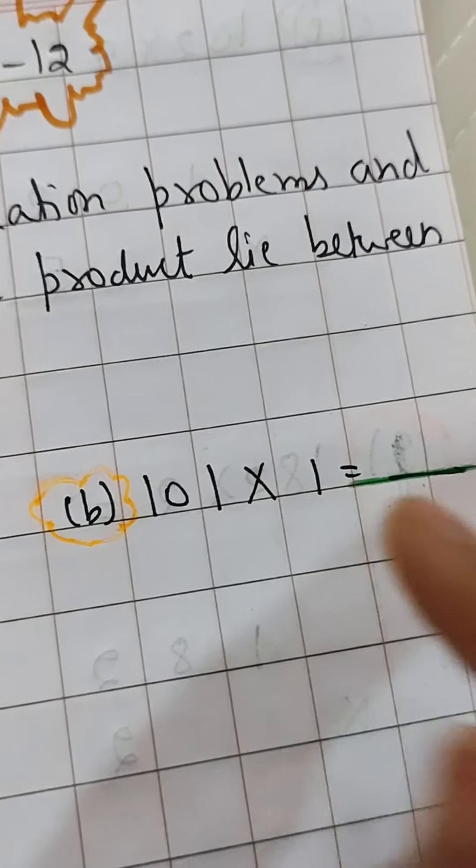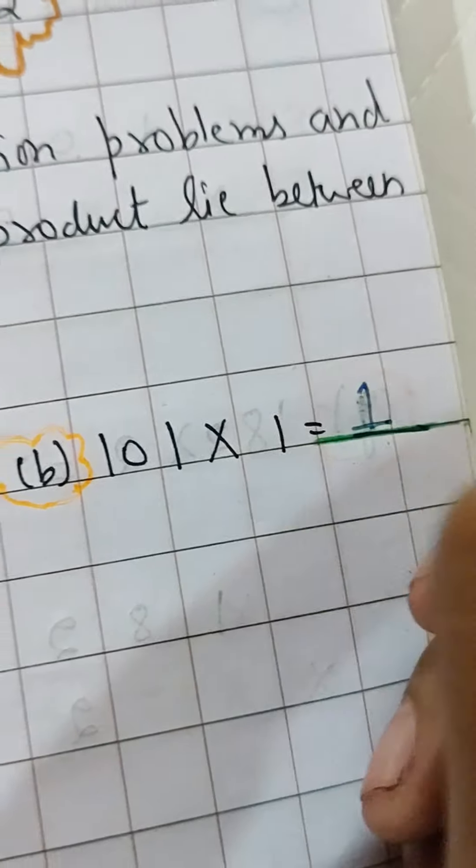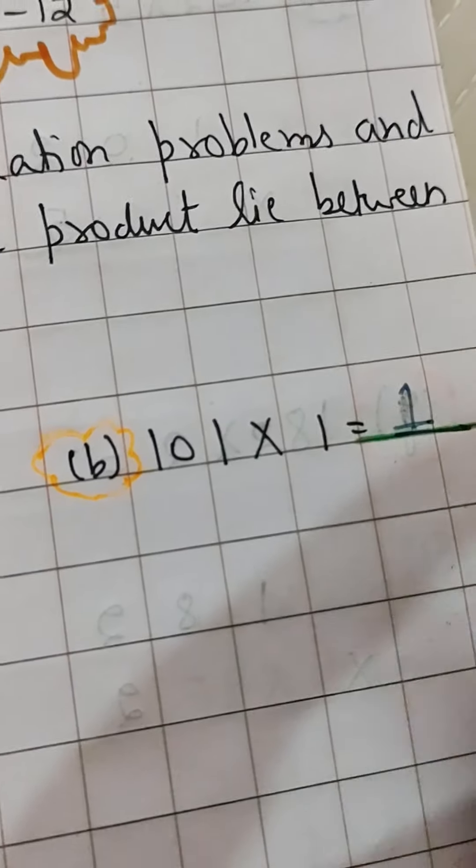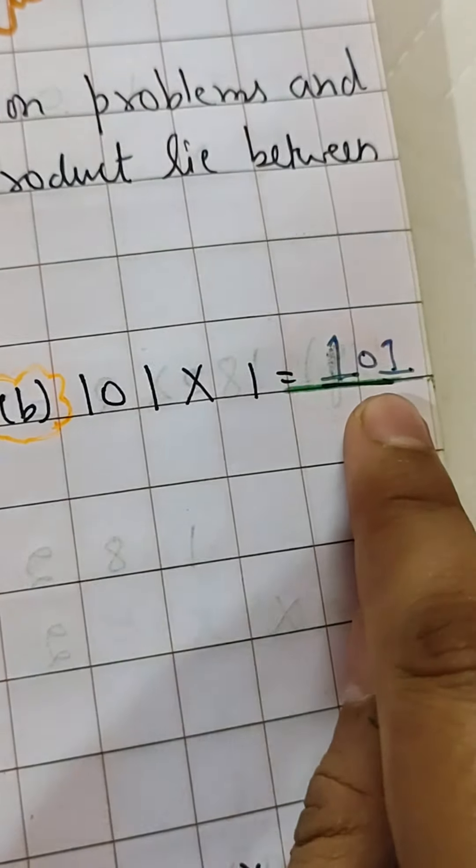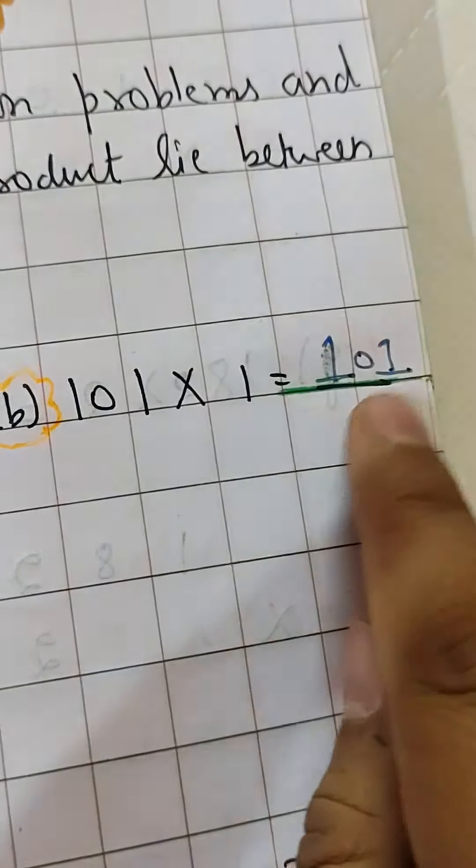Then you are having 101 multiply by 1, so your answer will be 101. So you will also not circle it. 101 multiply by 1, answer is 101. This is also smaller than 500, so 500 or 3000 ke beech mein nahi aata.